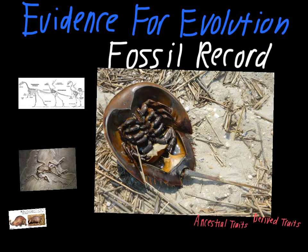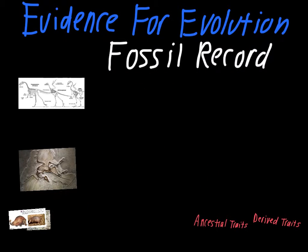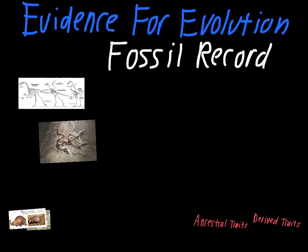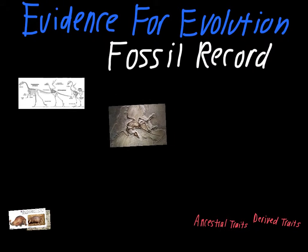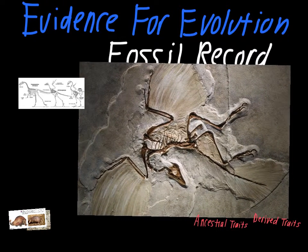Some species are extremely successful in their environment, and because of that they haven't really changed evolutionarily for a very long time. Horseshoe crabs are a good example of this, as are some species like sharks that have been around for literally millions of years and have gone, for the most part, genetically unchanged as far as evolution goes. One of the other concepts we're always looking for in the fossil record are things referred to as intermediate fossils.